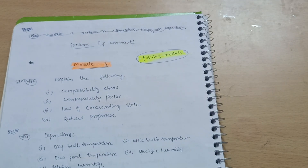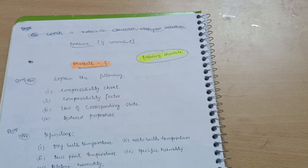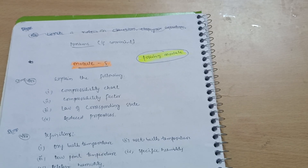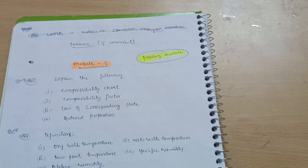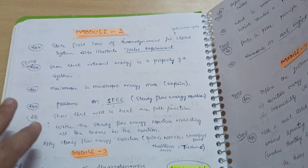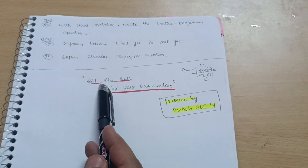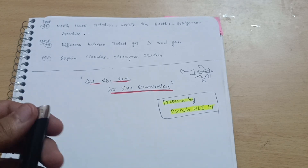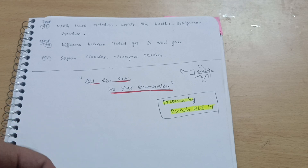Draw and explain the salient features of the PT diagram with water as an example — I call this a super important question. For numericals in Module 4, go through whichever problems you are comfortable with, as VTU examination problems are always different and usually not repeated. I recommend Module 5 problems and Module 2 problems especially. Go through whichever is convenient for you. All the best for your examinations, dear friends. Share this video with friends who need it, as this is a subject where most students struggle. Thanks for watching.